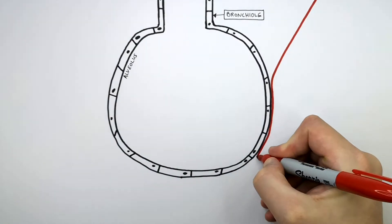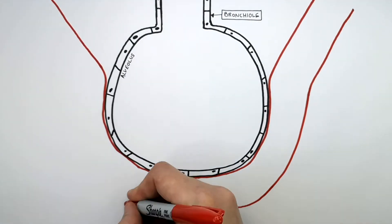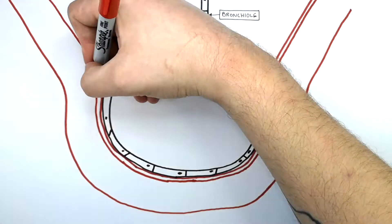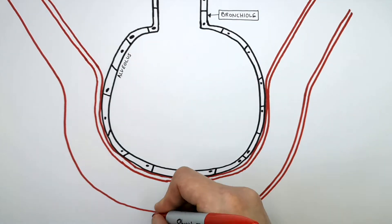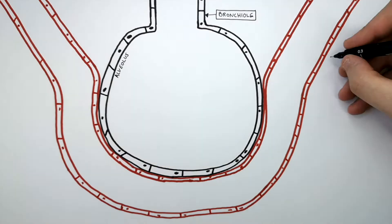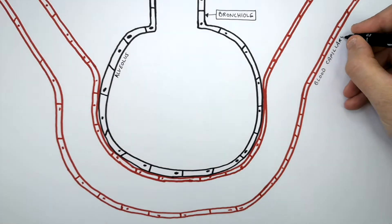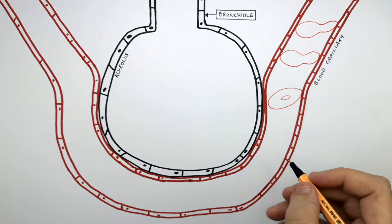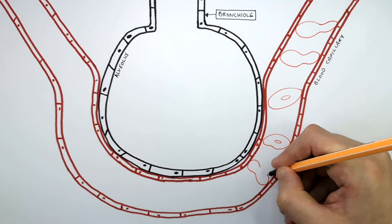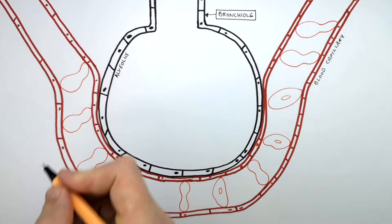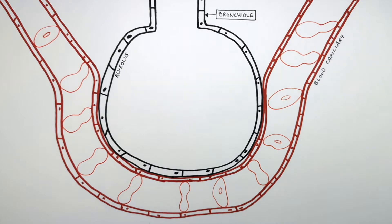What I'm drawing now is one capillary surrounding one alveolus. Just like the alveolus, the capillaries also have a one cell thick wall. This here is the blood capillary with a one cell thick wall. What I'm drawing now are the red blood cells — this shows that the capillary is one red blood cell wide. These are the red blood cells that carry oxygen around the body.